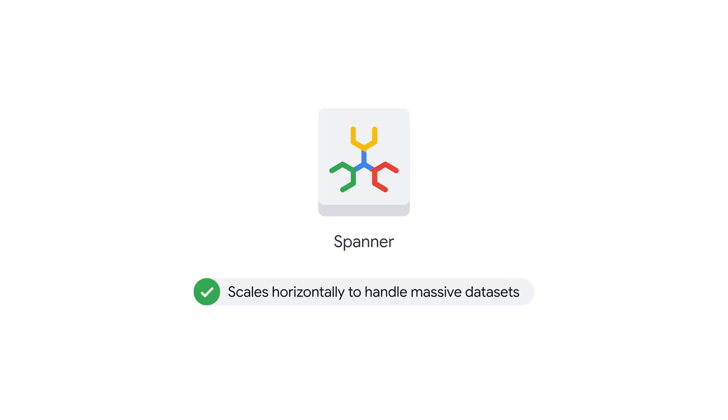As your data and user base grows, you want your database to accommodate that growth. Spanner scales horizontally with virtually unlimited scale to handle massive data sets and high traffic.